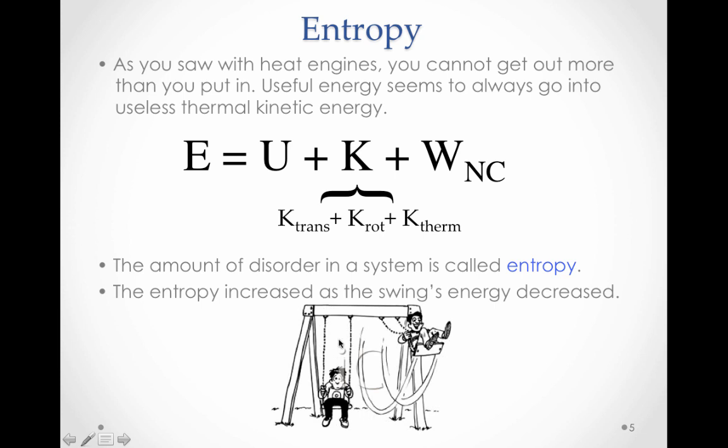For example, if I pull somebody back on a swing and let them go, they will eventually slow down and stop. Well, what happened to all that energy? It went into random molecular movement. The entropy increased in the system. The amount of disorder increased.